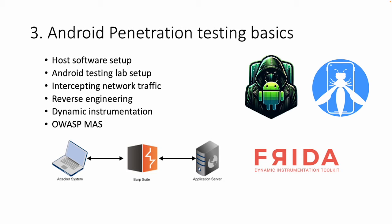After we know how to intercept traffic, we will continue with reverse engineering — how you can reverse engineer an Android app, usually packaged as an APK or AAB file — and then dynamic instrumentation: how you can dynamically instrument an Android app during runtime. The most common tool for this is Frida. For the pentesting part, OWASP — the Open Web Application Security Project — has a nice section for mobile, the Mobile Application Security, which we will also use during the attack surfaces.